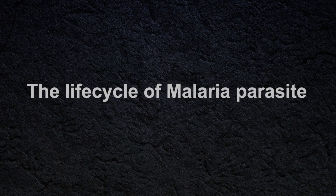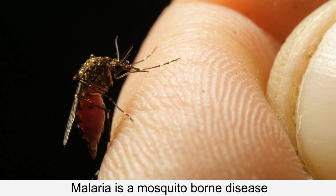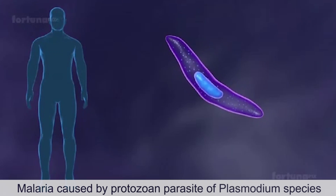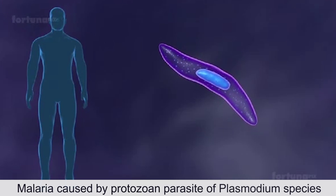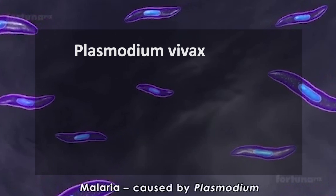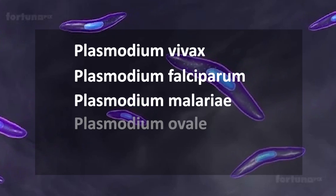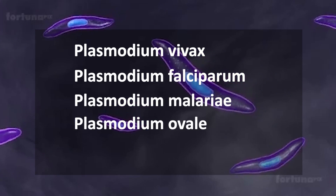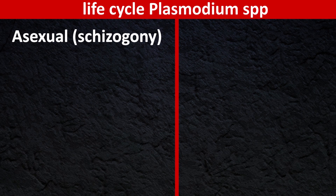Let's talk about the life cycle of malaria parasite. We know that malaria is a mosquito-borne disease and caused by protozoan parasite of plasmodium species, particularly plasmodium virax, plasmodium falciparum, plasmodium malaria, and plasmodium valet.